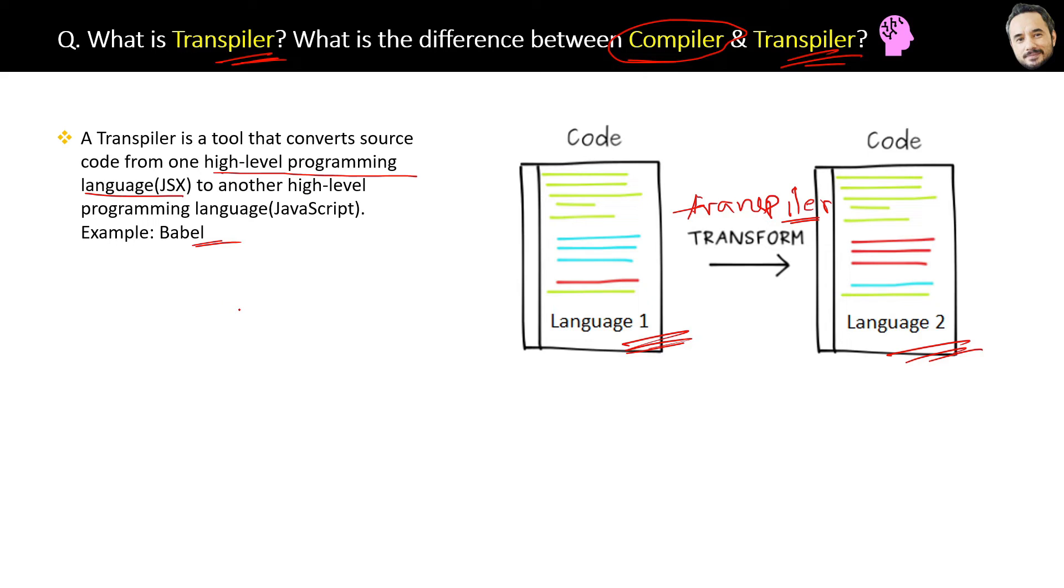Then what is a compiler? Here is the definition. A compiler is a tool that converts high-level programming language like Java into a lower-level language, machine code. This high to low is the difference.